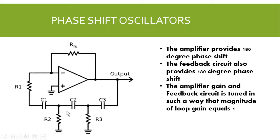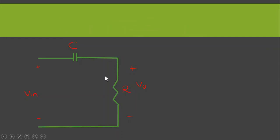To understand how this feedback circuit provides the phase shift, consider this simple RC circuit. We know that the phase shift of this RC circuit is given as tan⁻¹(Xc / R). The phase shift depends on Xc and R — and since Xc depends on capacitance C, changing the values of C and R allows us to change the phase shift. For a 90-degree phase shift, R should equal 0.